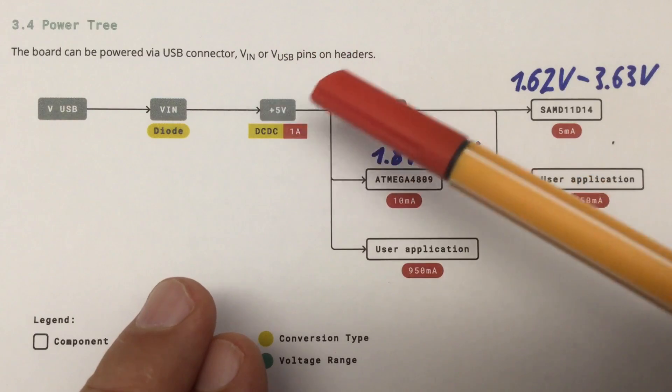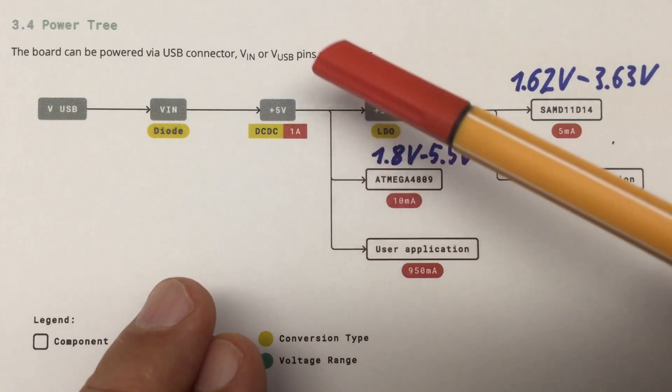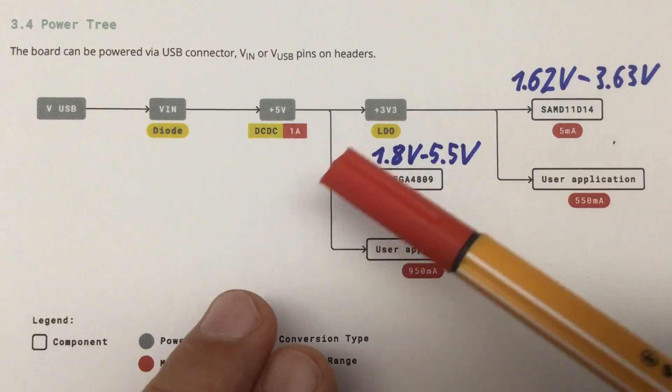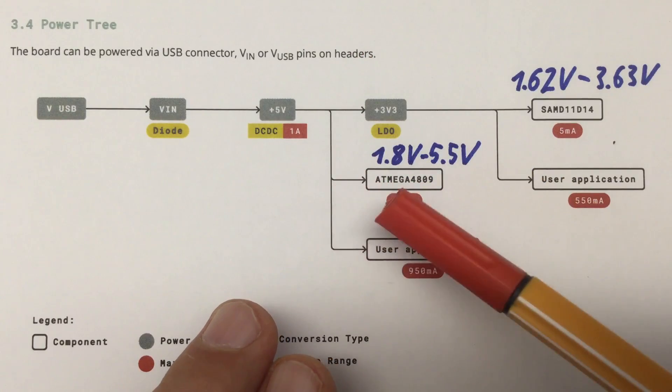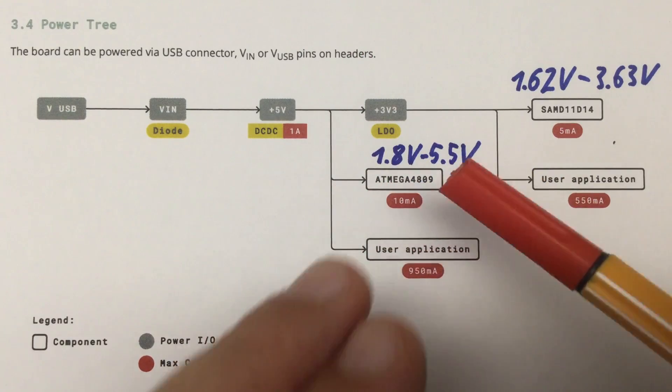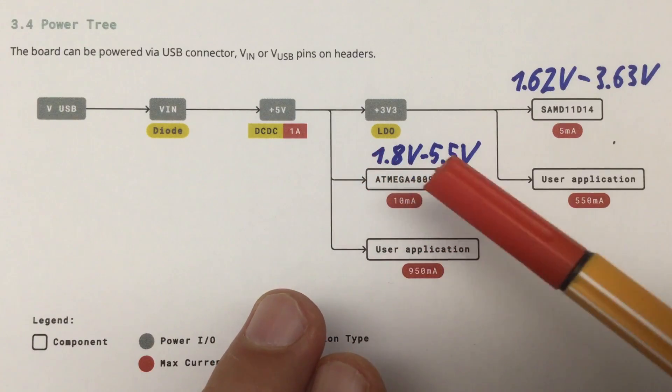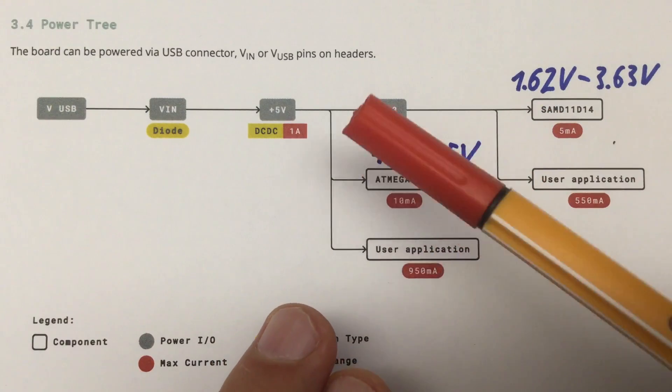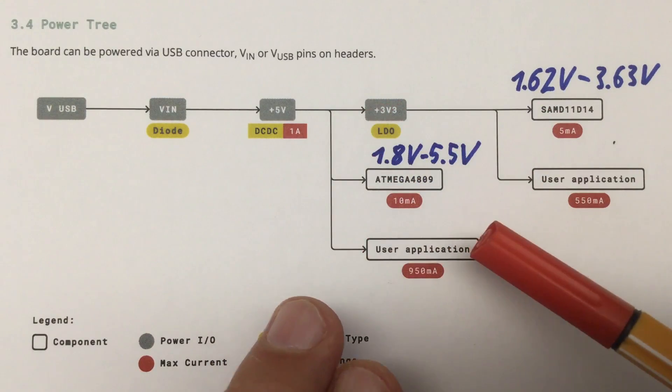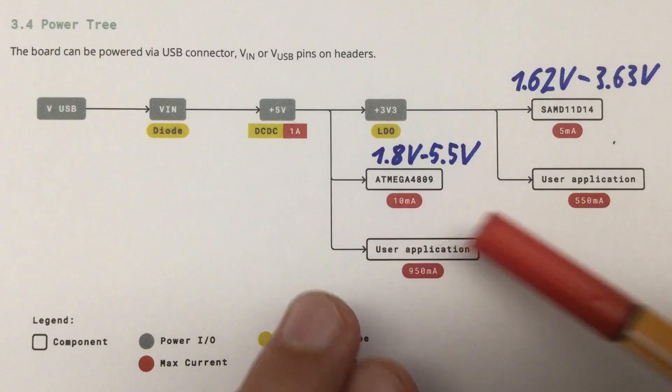That goes into, according to that diagram, a DC-DC converter that can deliver up to 1 amp and is converted to our 5 volt rail. That 5 volt rail supplies our ATmega4809, which is happy within a voltage range from 1.8 volts to 5.5 volts.